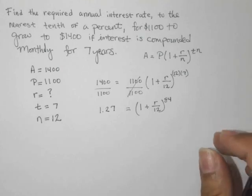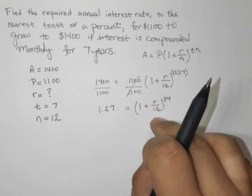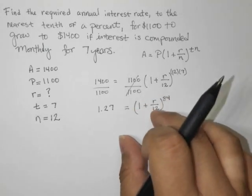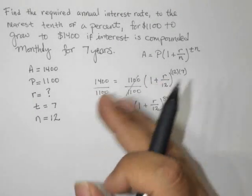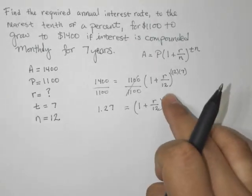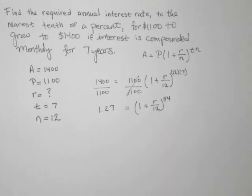Now, let's just assume, for example, that this was 1 plus R over 12 squared. So how would we solve for R in that case, or how would we isolate, how would we get rid of the square in that case? If you said square root, then you're correct. So if this was squared, to get rid of the square, the second power, we would take the square root. And that's actually what we're going to do.